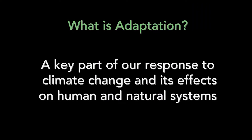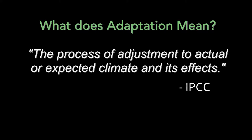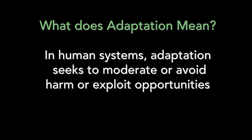Adaptation at its core is part of evolution. It is something that natural and human systems have always done. Humans adapt to moderate or avoid harm, or take advantage of new opportunities, and have a long history of doing so. Adaptation emerged as a key component of our response to climate change because of the effects that climate change impacts have on natural and human systems. The Intergovernmental Panel on Climate Change defines adaptation as the process of adjustment to actual or expected climate and its effects. For humans, this means reducing or avoiding the negative impacts of climate change and taking advantage of potential opportunities from positive impacts.